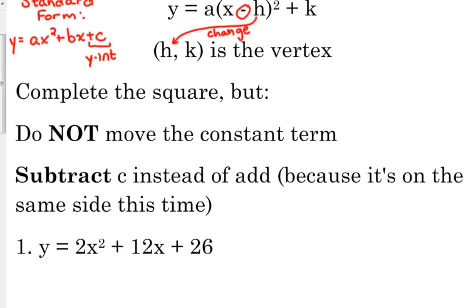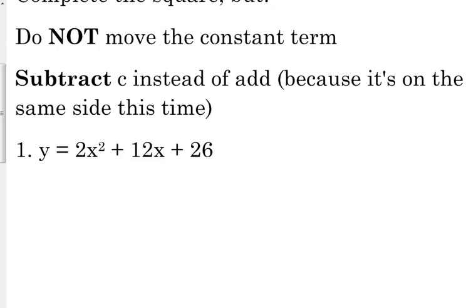All right, so let's look at number 1 from your worksheet there. It is 2x² + 12x + 26. We're still going to go through the process of completing the square. It's just going to look a little bit different.